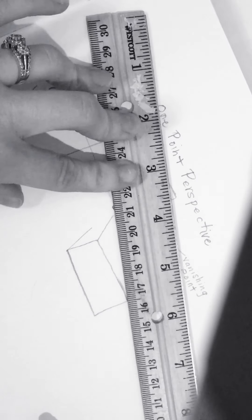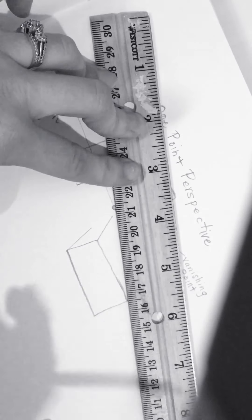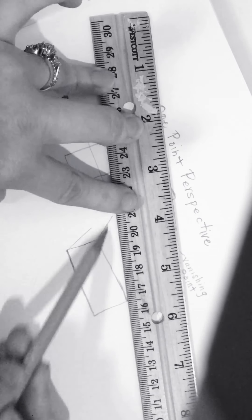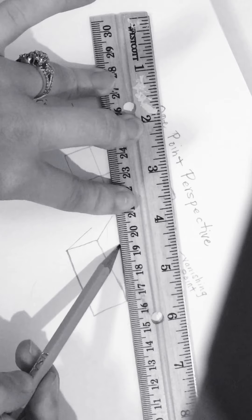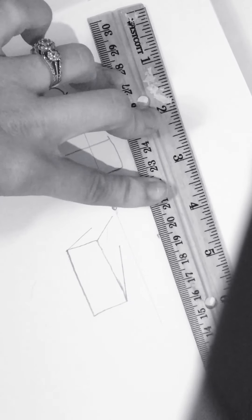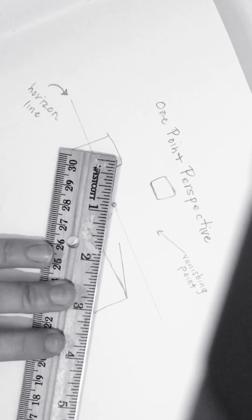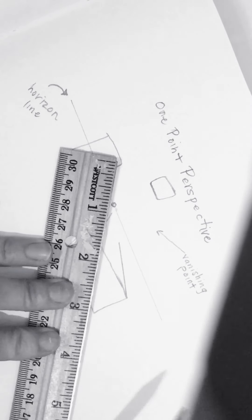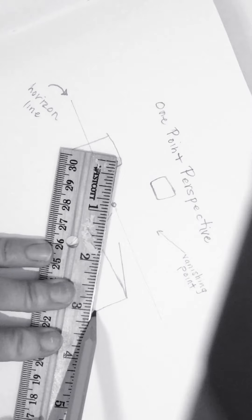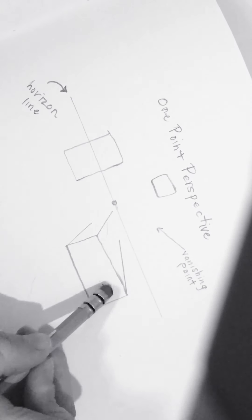And then using my ruler, I'm going to line it up with the vanishing point and my corner. Notice, though, how I haven't done my dashed line like we practiced in class. I could do that. That helps me see that this is a three-dimensional form. However, if that's more confusing for you, we'll just skip the dashed lines.